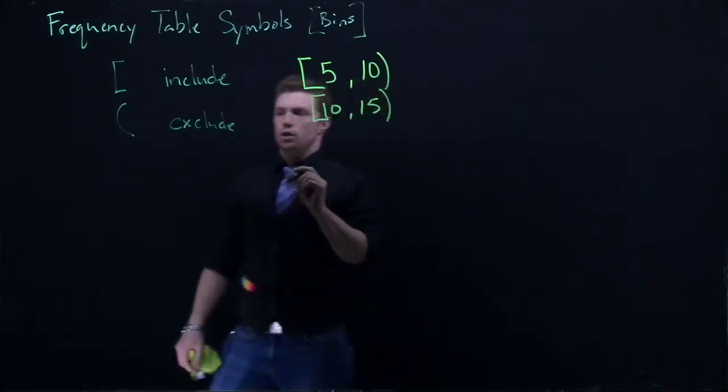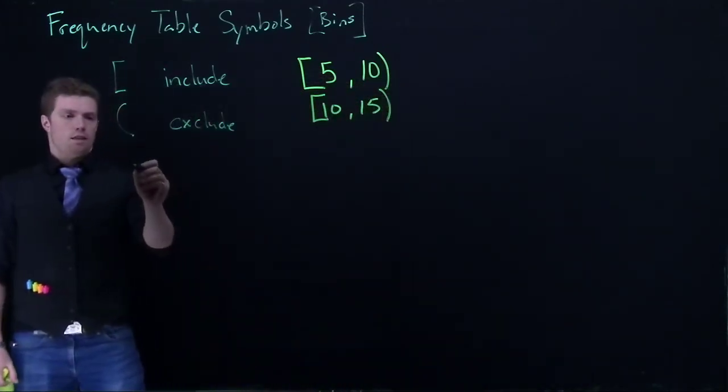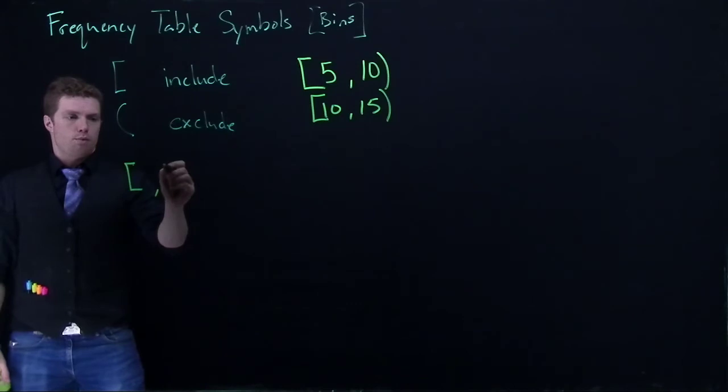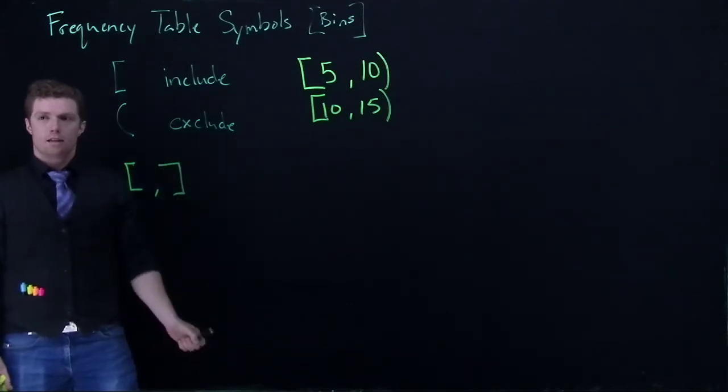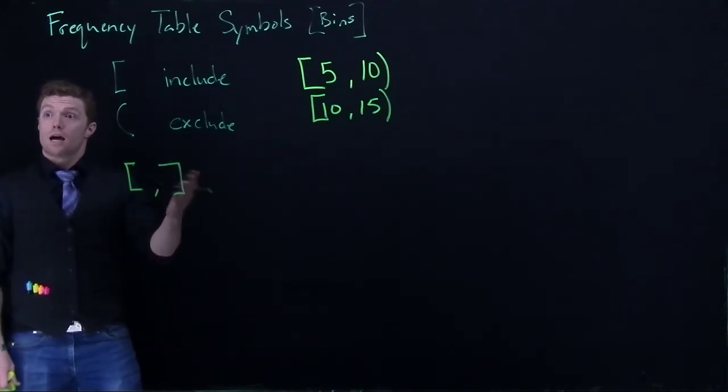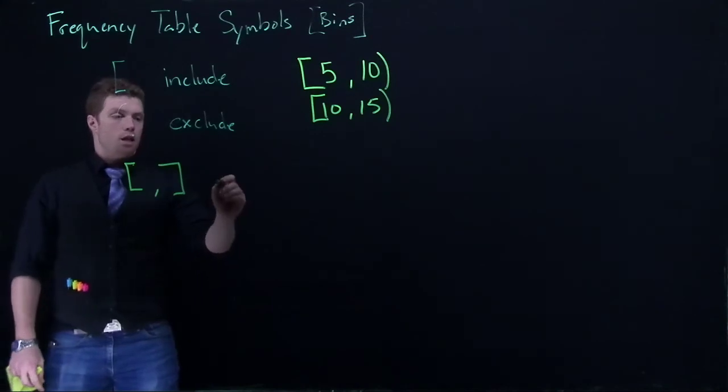So, another combination that we could do is something like this, where we could have a square bracket and a square bracket. This means we're including both the top and the lower. So, this would be a closed interval.